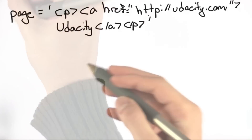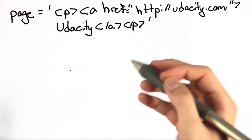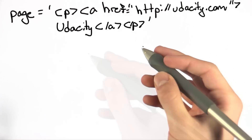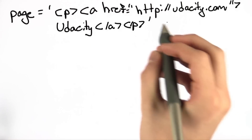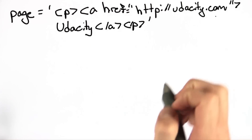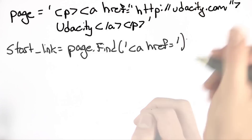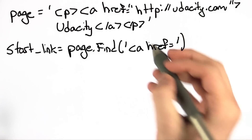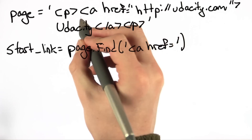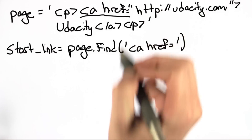One way to think about this tricky problem is by using a concrete example. Here we have some HTML that specifies the word Udacity with a hyperlink to our website. As you know, we can use page.find to find the beginning of the hyperlink.